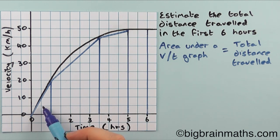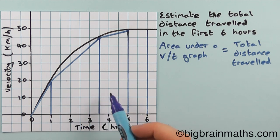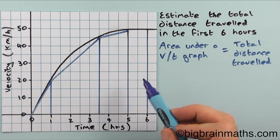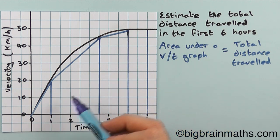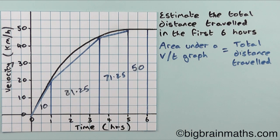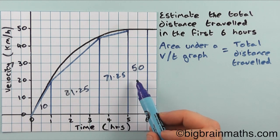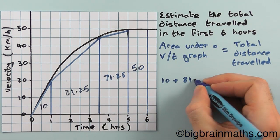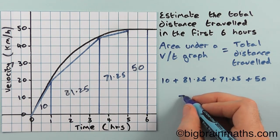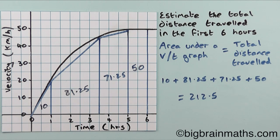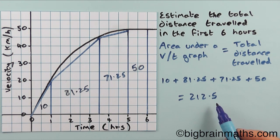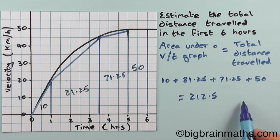Now I need to use the area of a triangle formula, the area of a trapezium formula for the two trapeziums, and the area of a rectangle formula to work out the areas of these shapes. Once you've calculated the areas of all four shapes, add them all up — this total will be an estimate for the area under the velocity-time graph, and because the area under a velocity-time graph equals the total distance travelled, this is also our estimate for the total distance travelled in the first six hours.